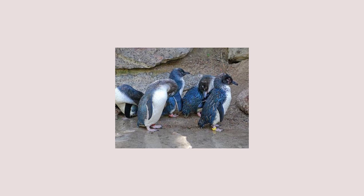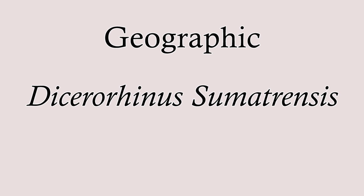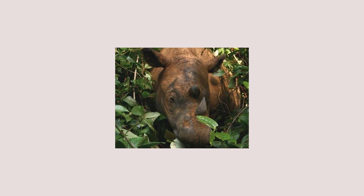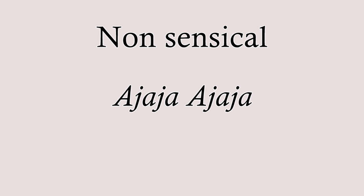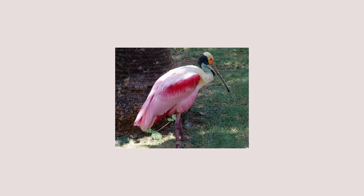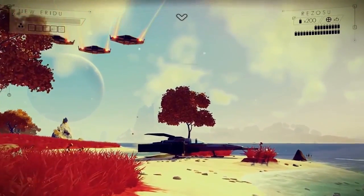Or it can be geographic — for example, Dicerorhinus sumatrensis. Yes, you guessed it: it's something from Sumatra, namely the Sumatran rhino. Or it can be completely nonsensical. A good example is Aia aia — this doesn't mean anything, it's not even a Latin word, but it is in fact the official scientific name of the bird called the spoonbill. As you can see, it's very simple and open to a lot of creativity.